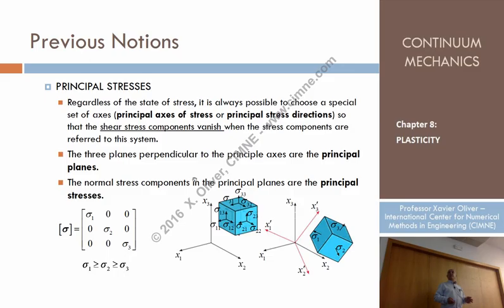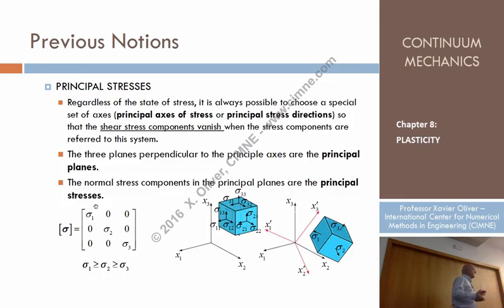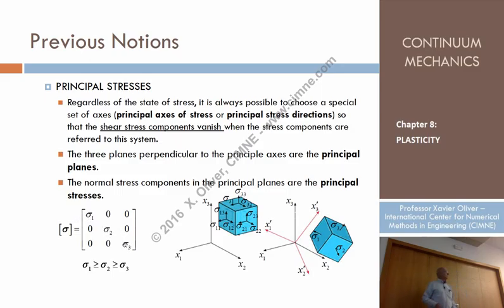Engineers will talk about principal planes or principal directions and principal stresses. Mathematicians talk about principal eigenvalues and eigenvectors, but essentially it's the same. It can be proven that there is a system of Cartesian axes in which the components of the stress tensor — the matrix of components — becomes diagonal. There is always this system, which is an orthogonal system.